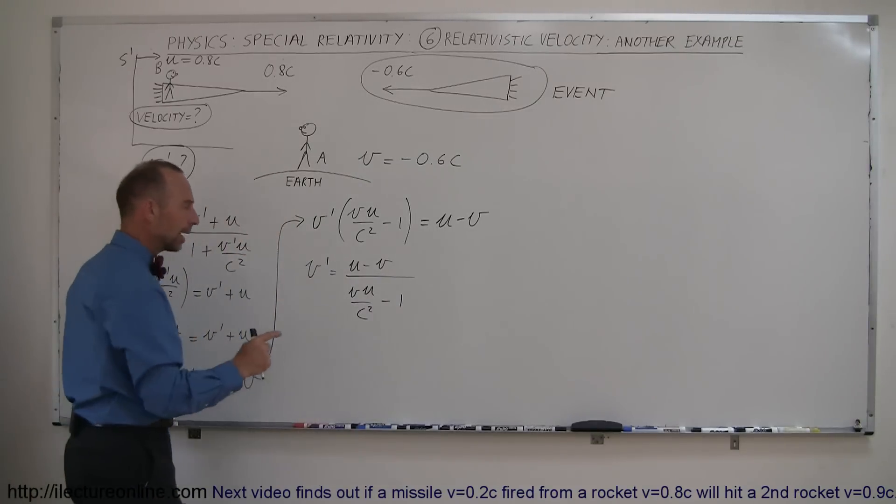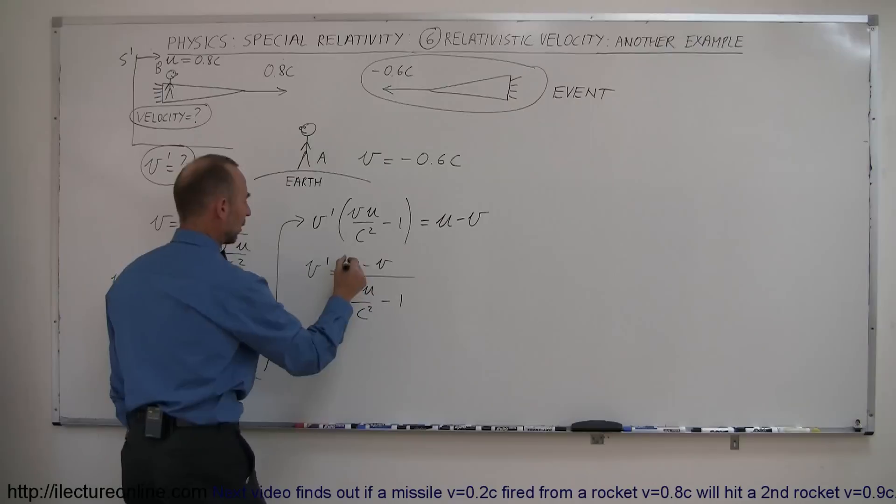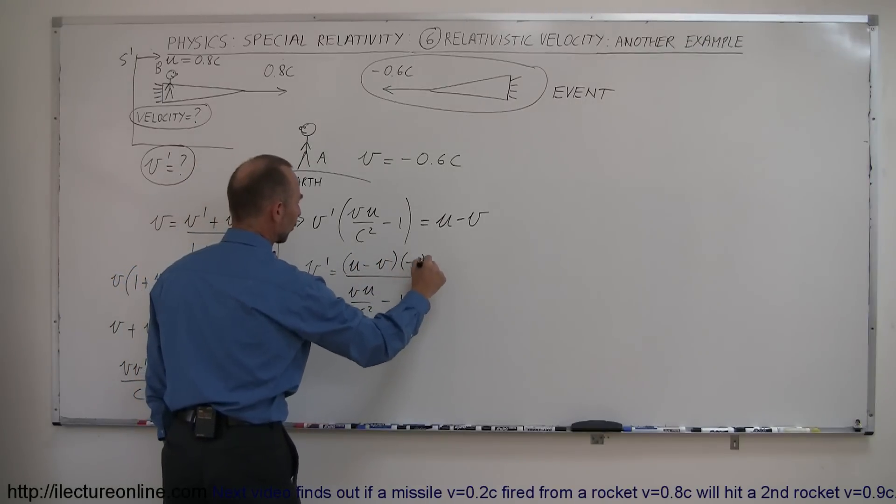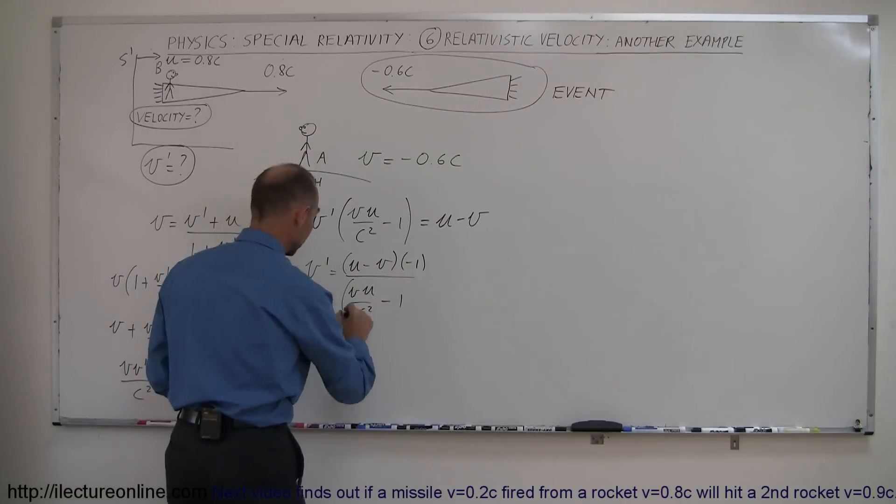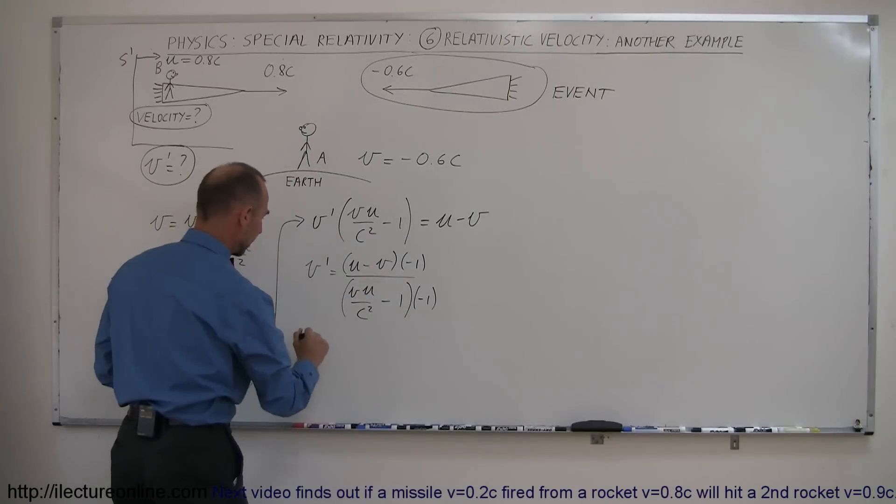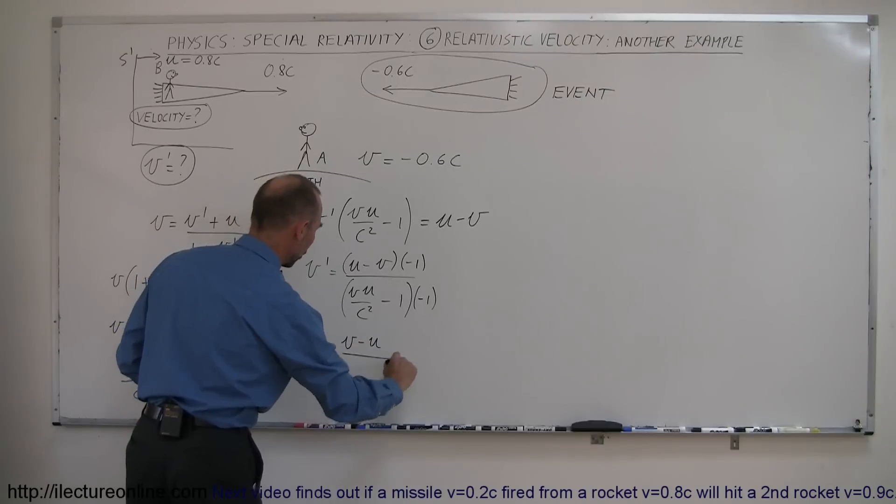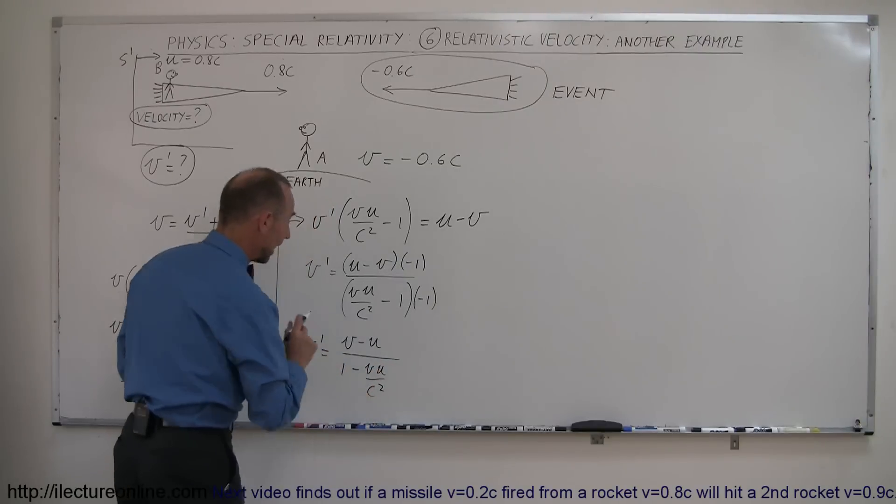And then if we multiply both the numerator and the denominator by negative 1, so we can switch them around. So I'm going to multiply this by negative 1. Of course, whatever I do to the numerator I have to do to the denominator. So multiply this times negative 1. That simply turns these two around. So we have V' is equal to V minus U over 1 minus VU over C squared. And now we're ready to go.